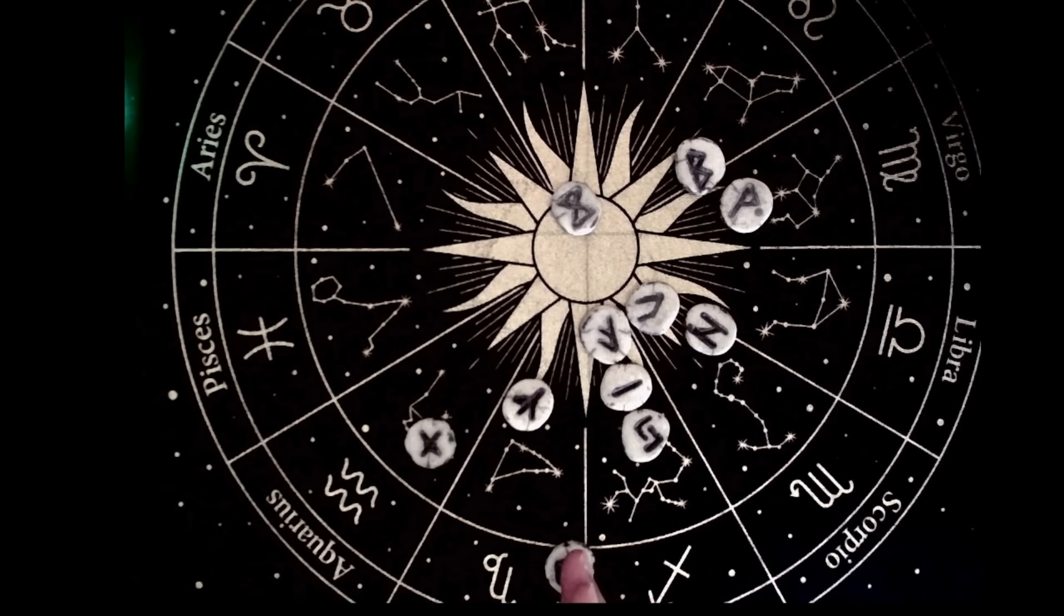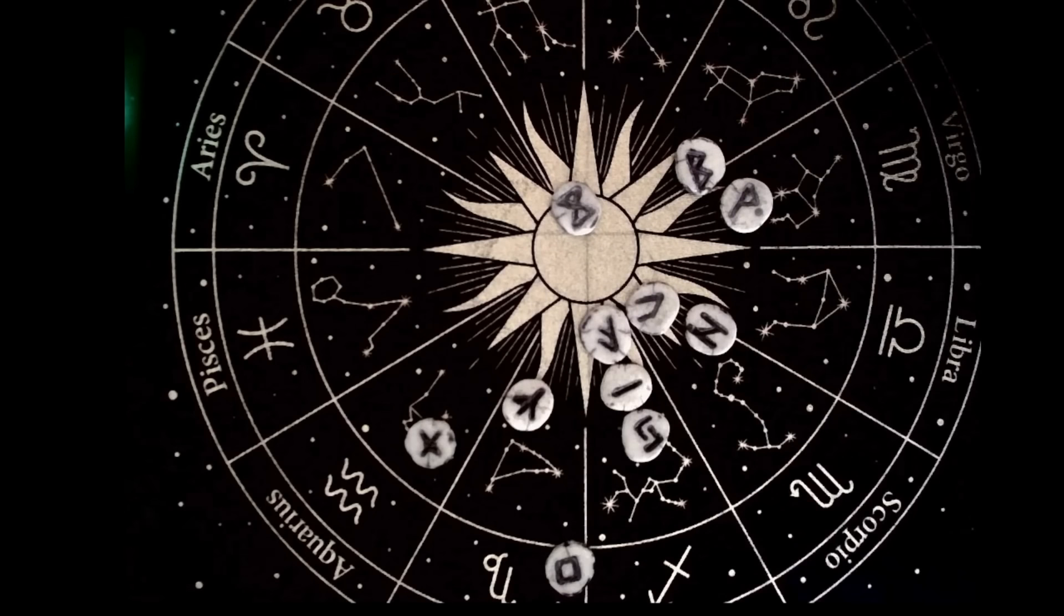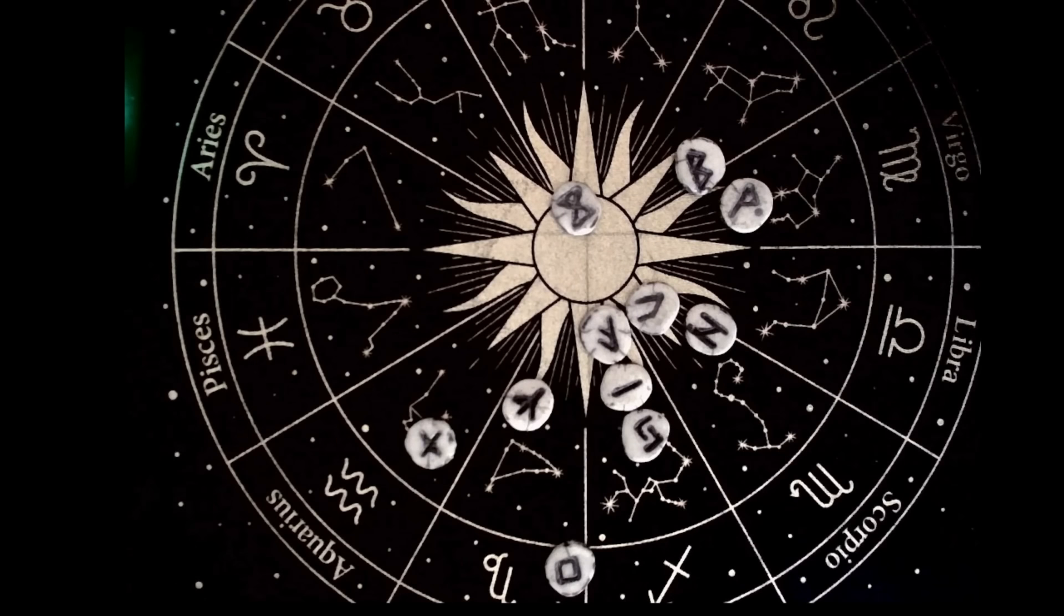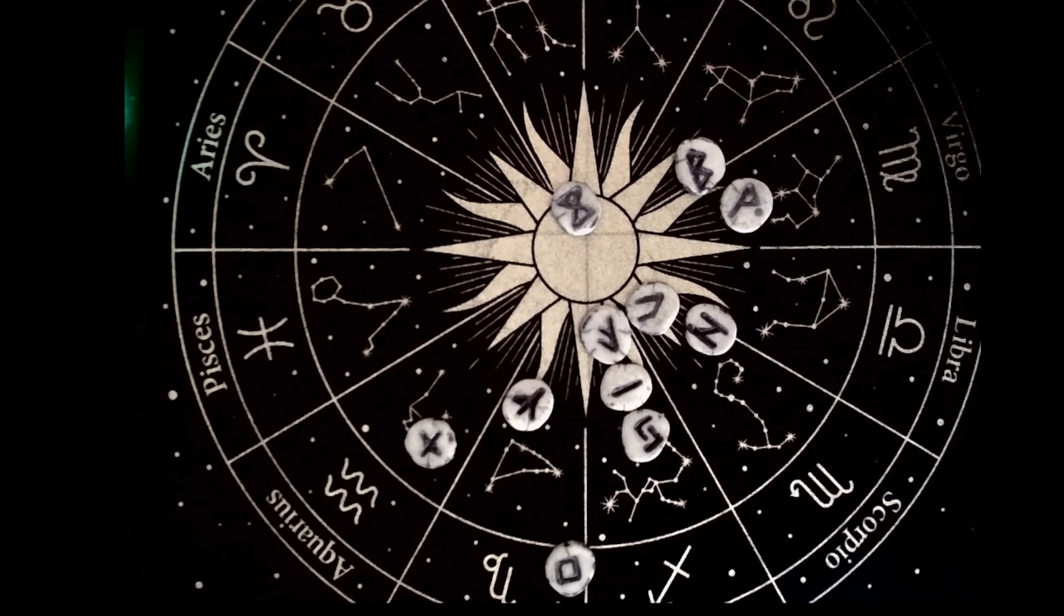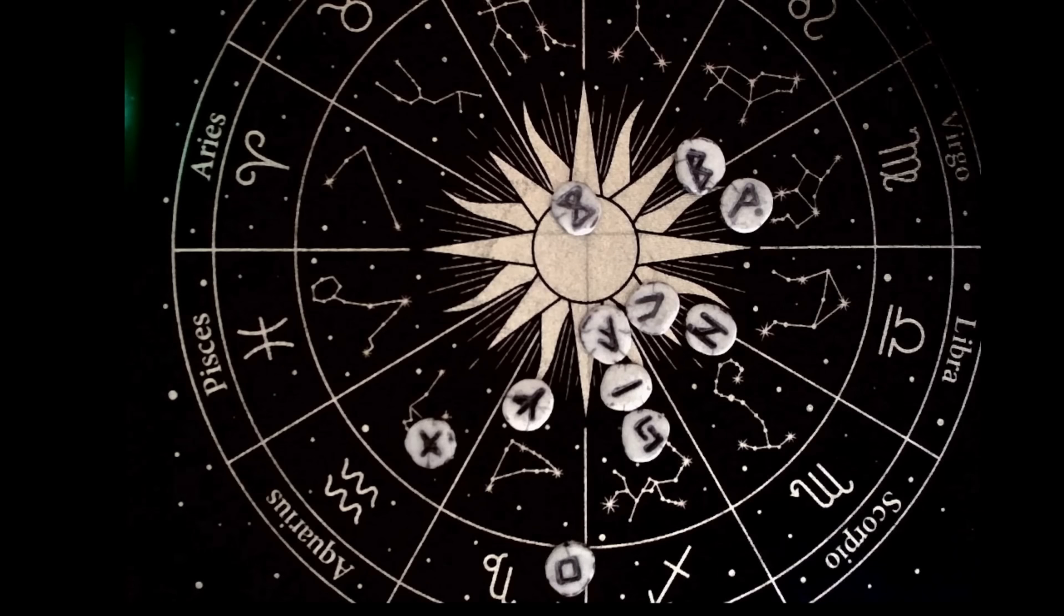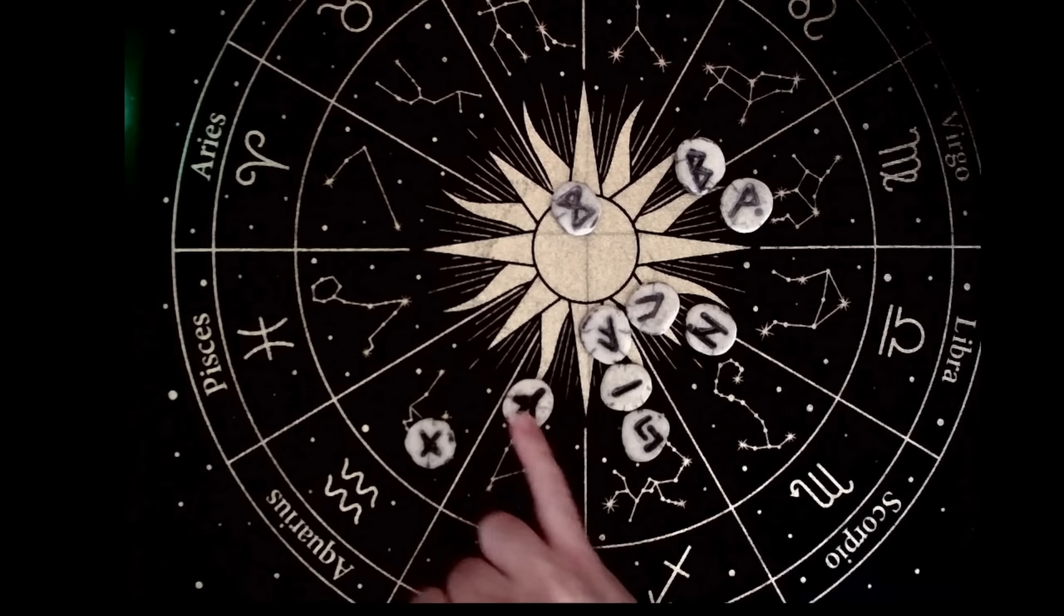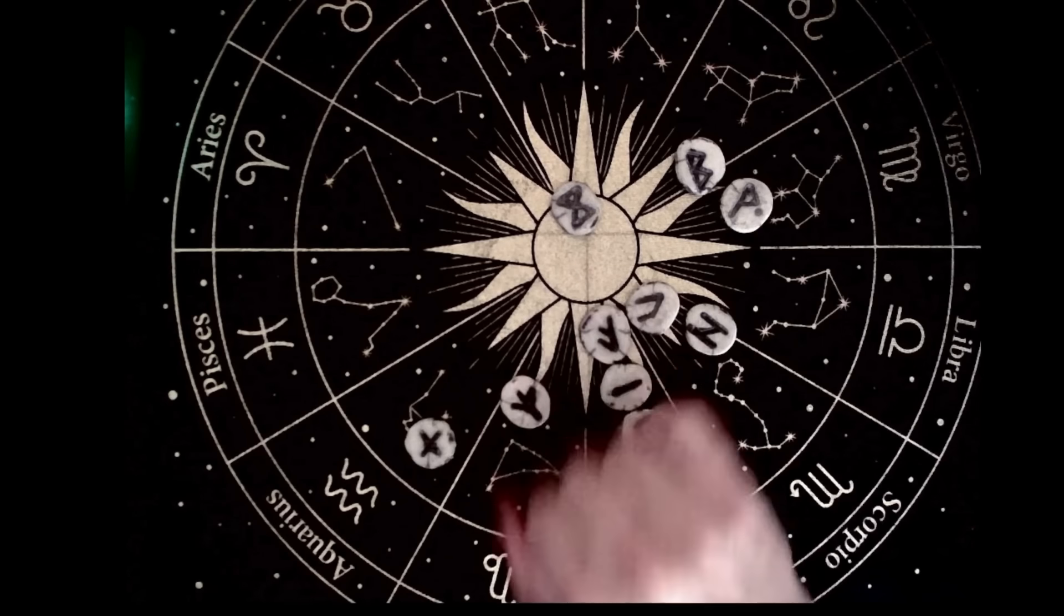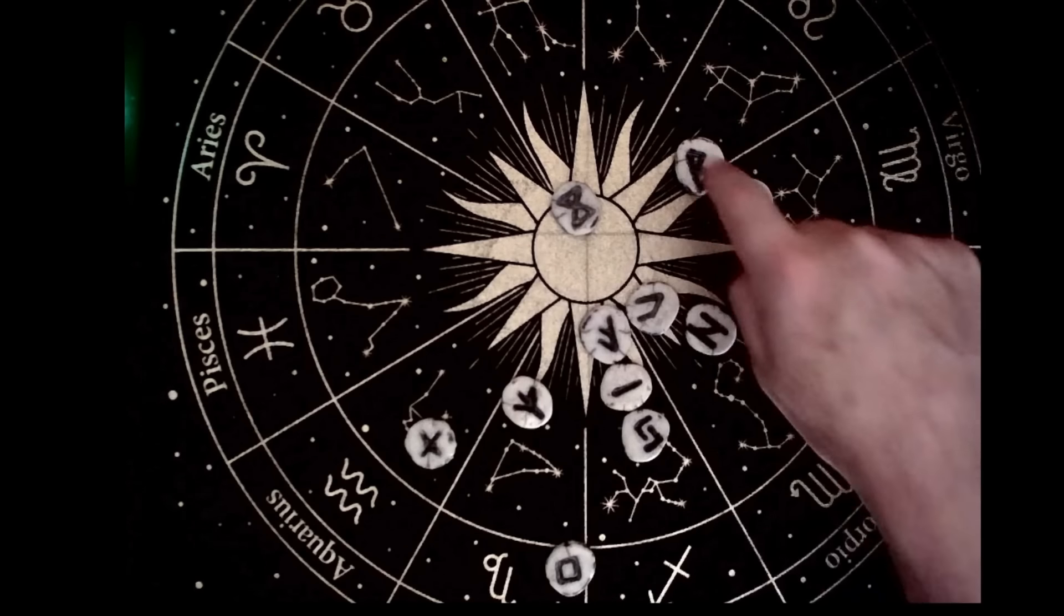Et c'est ce que je vous propose de découvrir. On va commencer à lire les runes de cette façon-là. Comme une évolution, finalement. Parce que des liens, il peut y en avoir plusieurs. Les liens peuvent évoluer au fil de la vie. On va donc avancer rune par rune. Si vous l'avez reconnu, celle-ci, il y a quand même une rune de protection. Et puis, on tourne ainsi.